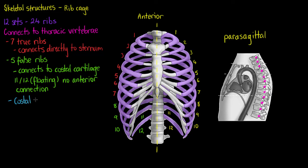The next structure we're looking at is our costal cartilage, highlighted here in blue, which connects our ribs to the sternum. The costal cartilage is hyaline cartilage and contributes quite a lot to the elasticity and flexibility of our ribcage, allowing us to expand and contract our ribs when we're breathing and spring back into place.